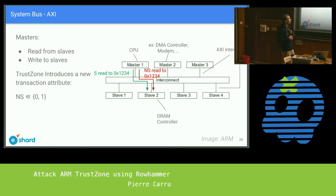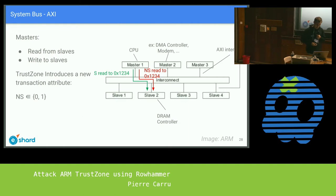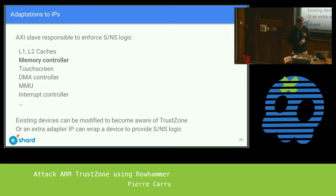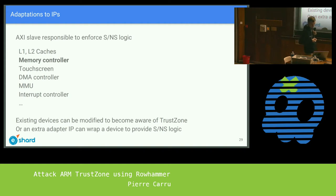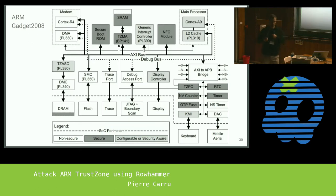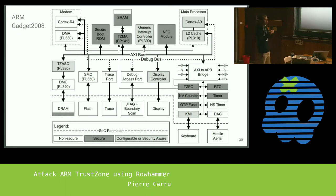If you try to access the portion of memory reserved for the secure OS from a non-secure state, it will return an error and you get an exception. Any IP block can be adapted to have security rules — it just has to interpret this flag. In our case we're interested in the memory controller. You can modify the DRAM controller to have rules about which portions are secure or non-secure, or use a separate IP in front that acts like a firewall.